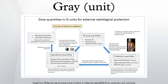Unlike the pre-1971 non-SI Röntgen unit of radiation exposure, the gray when used for absorbed dose is defined independently of any target material. However, when measuring kerma, the reference target material must be defined explicitly — usually dry air at standard temperature and pressure.